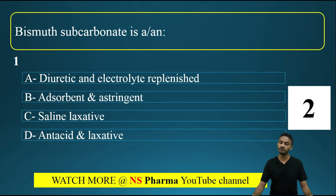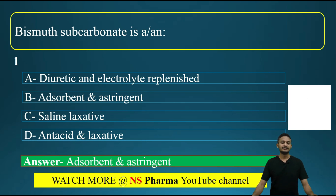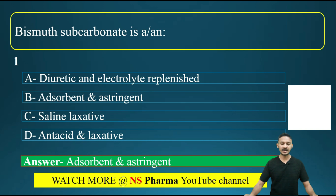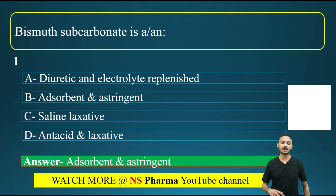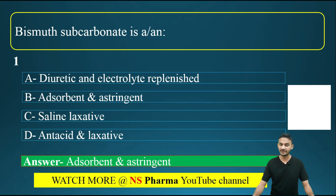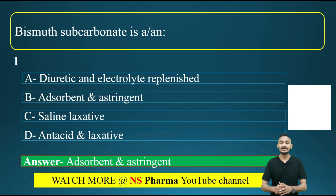The correct answer for this question is option B, that is adsorbent and astringent. Bismuth subcarbonate is an adsorbent and also it can be used as an astringent. Its other uses include antiseptic agent and treatment of diarrhea. So the uses are: adsorbent, astringent, antiseptic, and treatment of diarrhea.